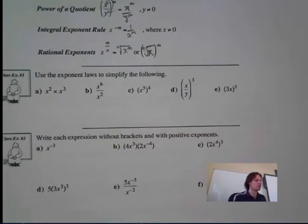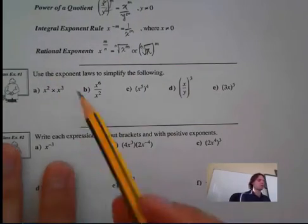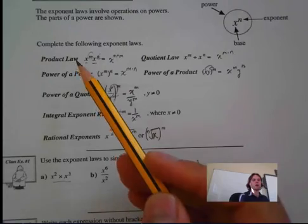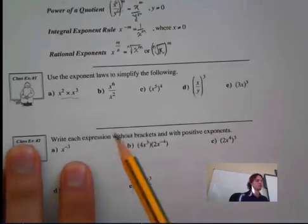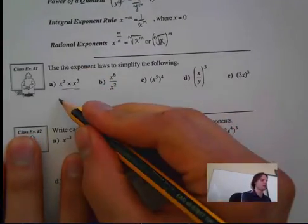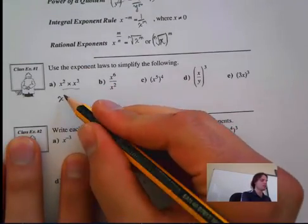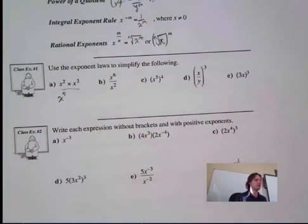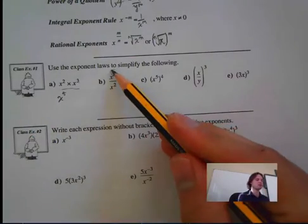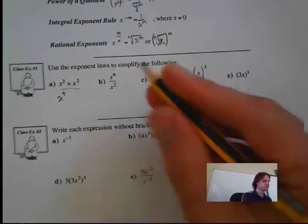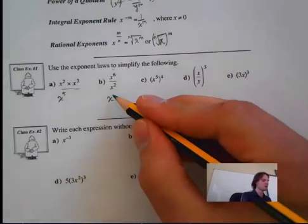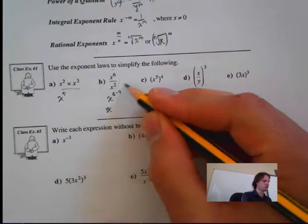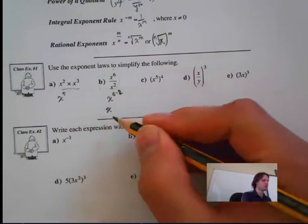Our first example: use the exponent laws to simplify the following. This one here is our product law — we add the exponents together. x to the 2 plus 3 is x to the 5. This next one is the quotient law: x to the 6 minus 2, which is x to the 4.